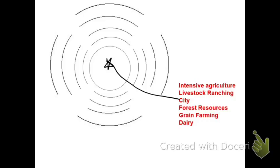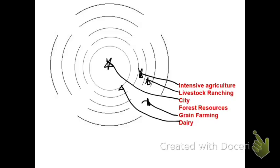As we move out from the city, we're going to move from intensive activities like dairy, or intensive agriculture, to more extensive activities like livestock ranching and grain farming. And then in the outermost ring, we're going to have our forest resources taking place all around out there.